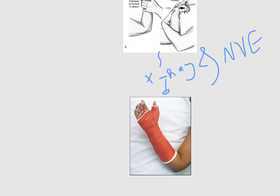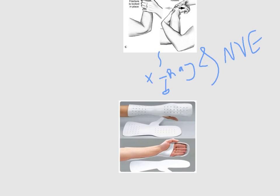If the reduction is good enough, we apply a dorsal slab extending from just below the elbow to the metacarpal joint, covering two-thirds of the way around the circumference of the wrist. The arm can then be wrapped with a crepe bandage. The outcome in older people is good, but in young people it is poor.